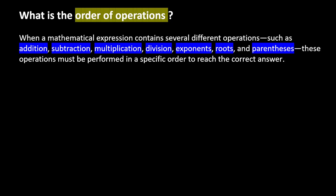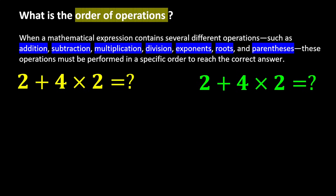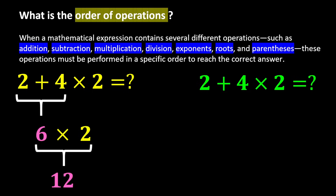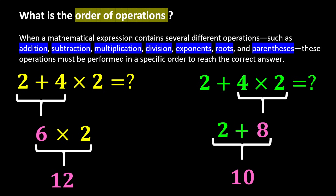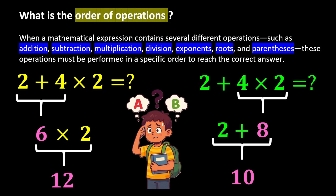To better understand this concept, pay attention to this example: 2 plus 4 times 2. If we first calculate 2 plus 4, it becomes 6, and 6 times 2 gives us 12. But if we first calculate 4 times 2, it gives us 8, and 8 plus 2 gives us 10. Now, in your opinion, is the correct answer 10 or 12?